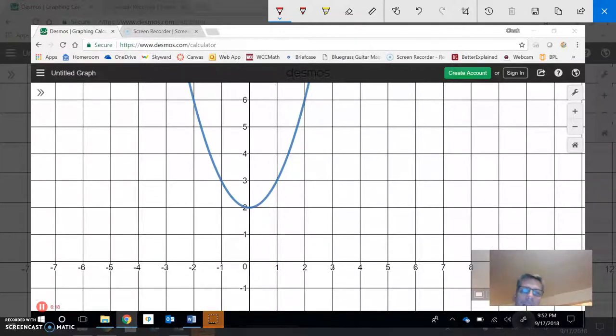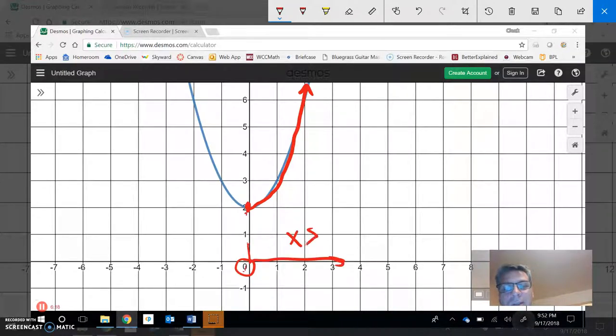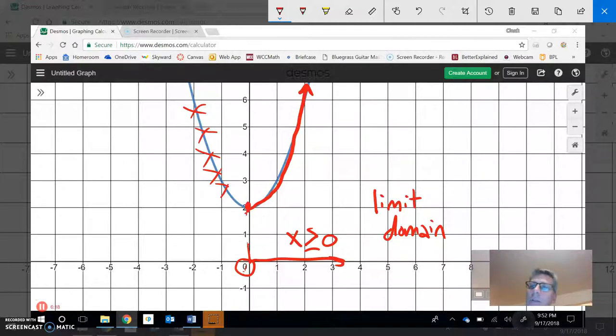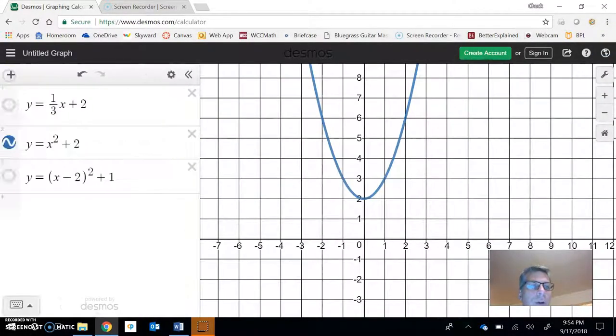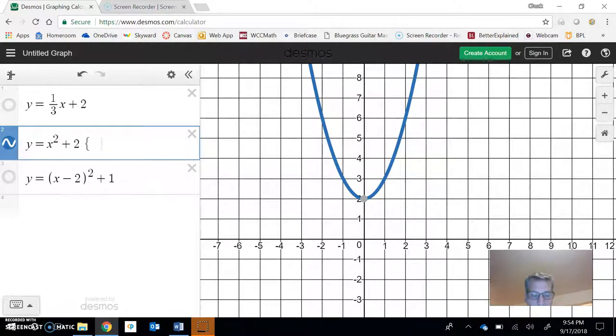But what I can do is I can make it so part of it is invertible. So what I'm going to do is I'm going to cut it in half. I'm going to find its low point. And I'm just going to take just one branch of it. So what I want to say here is, notice my x value is zero here. I want to say x is greater than or equal to zero. So what I'm doing here is I'm limiting the domain.